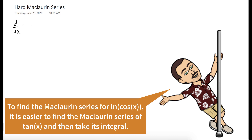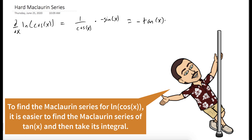To find the first four terms of the Maclaurin series of natural log of cosine of x, we should note that the derivative of natural log of cosine of x is one over cosine of x times negative sine of x, which is equal to negative tangent of x. So we're going to find the Maclaurin series for tangent of x and then evaluate its integral, which will give us the Maclaurin series for ln of cosine of x.